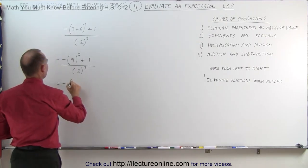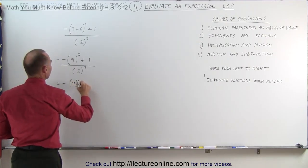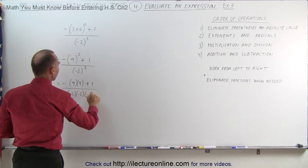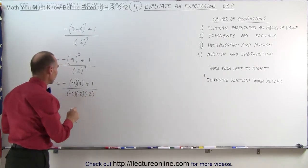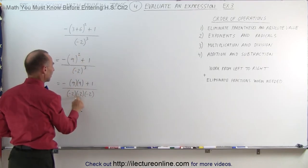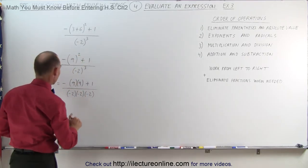This is equal to negative 9 times 9 plus 1. And in the denominator this is equal to negative 2 times negative 2 times negative 2. Notice the negative sign here is outside, it's not affected by the exponent. Here the negative sign is inside and it is affected by the exponent.